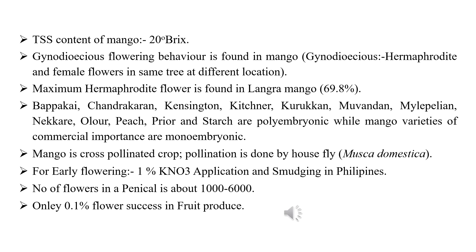Polyembryony is found only in non-commercial varieties like Bapakai, Chandrakaran, Kensington, Hitchner, Kurkan, Mowendal, Myopulene, Nacri, Olar, Peach, Praia, Stars, etc. In most commercial varieties, monoembryonic nature is found.